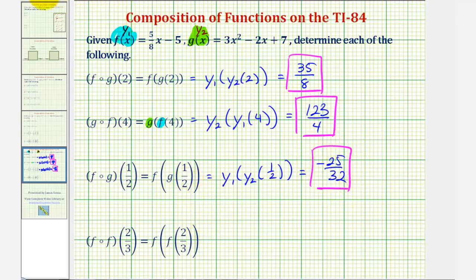And for our last example, we have f of f of two-thirds, which would be y sub one of y sub one of two-thirds.